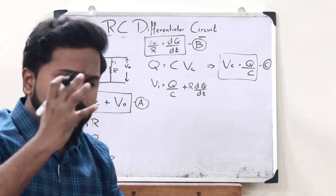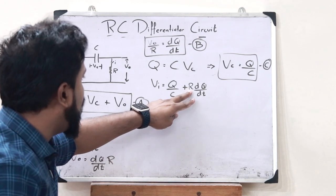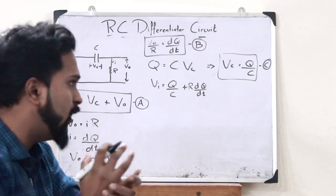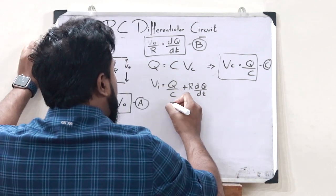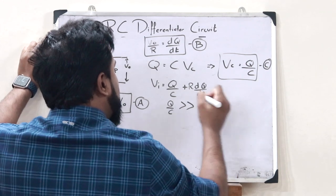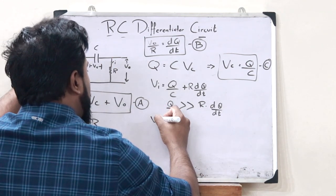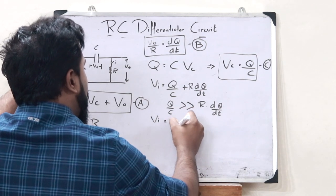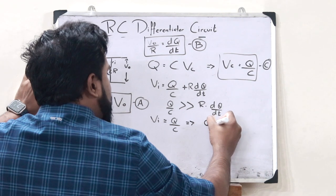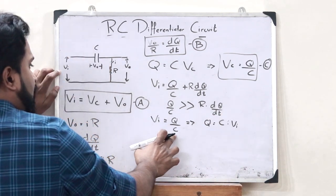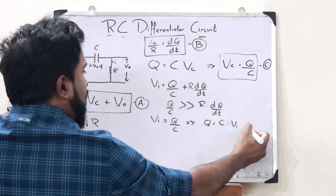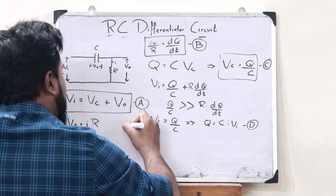Now substituting equations B and C into equation A, we get Q by C plus V0, where V0 is dQ by dT times R. We are making an assumption that the values of resistor R and capacitor C are considerably very small. If so, the first term Q by C is very much greater than the second term R times dQ by dT. Therefore we can write Vi is approximately equal to Q by C, which implies Q equals C times Vi. Let us call this equation D.